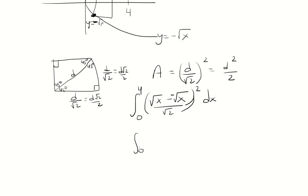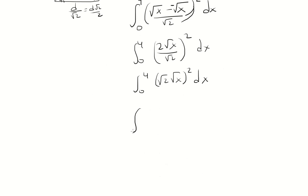We have the integral from 0 to 4 of (2√x/√2)² dx. Simplifying: 2/√2 = √2, so we have (√2·√x)². If you square the √2, it becomes 2. If you square the √x, it becomes x. So that's 2x.